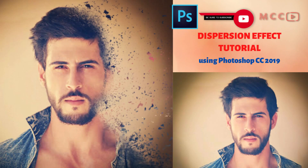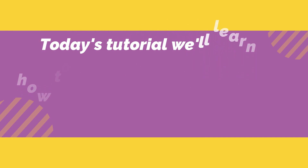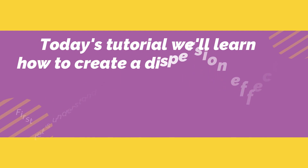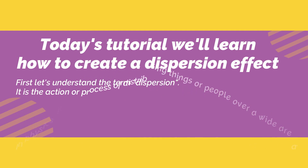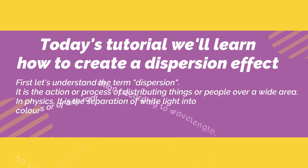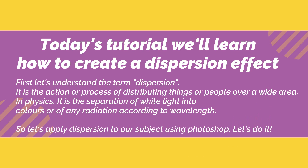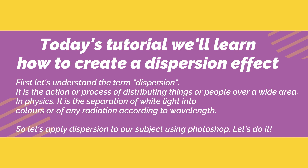Hello everyone! Today's tutorial will learn how to create a dispersion effect in Photoshop. First, let's understand the term dispersion. It is the action or process of distributing things or people over a wide area. In physics, it is the separation of white light into colors or of any radiation according to wavelength. So let's apply dispersion to our subject using Photoshop. Let's do it!